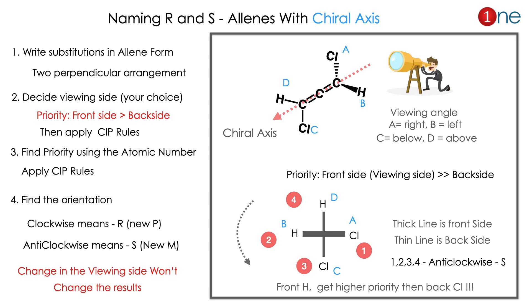Now let us look at the molecule. You are seeing it from the AB side in normal tetrahedral form. You have to predict the orientation: AB has higher priority. Among AB, chlorine has higher priority and hydrogen is the lowest. On the back side, hydrogen gets lowest priority and chlorine gets higher priority. Going 1, 2, 3, 4 in the anticlockwise direction — it is S.